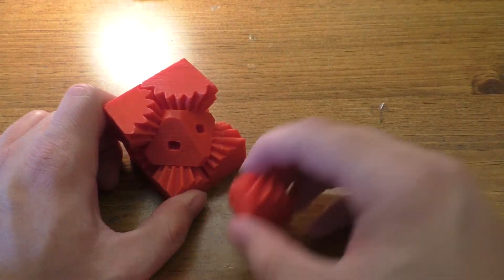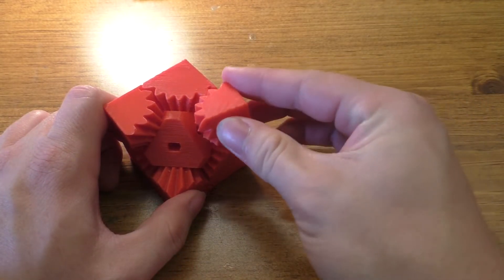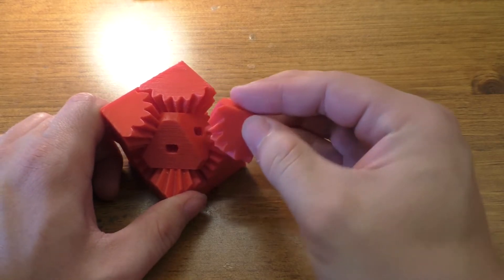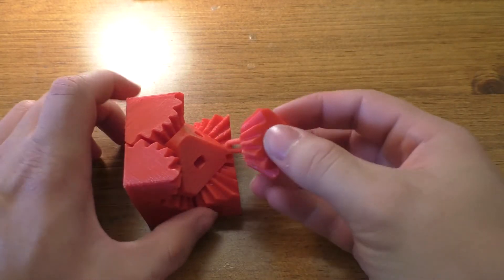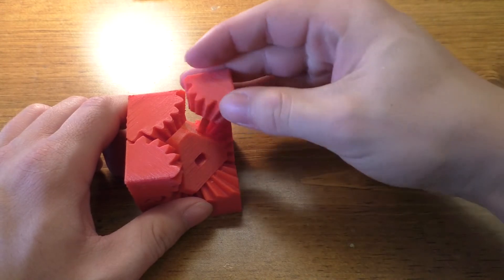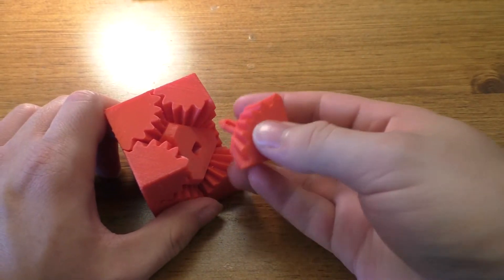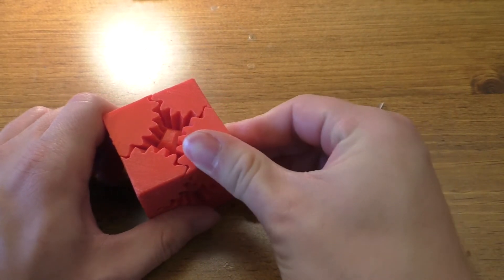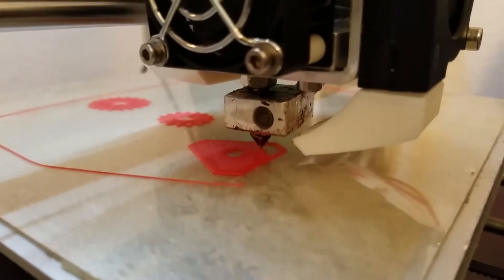So assembly is pretty simple. You've just got to make sure that it lines up as a cube. And they just snap together like so.